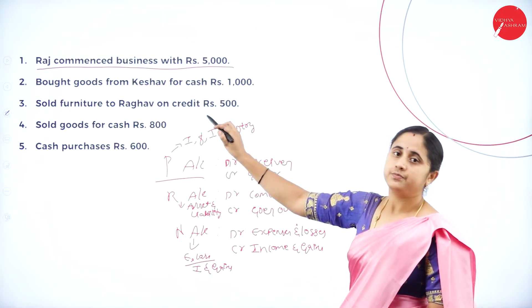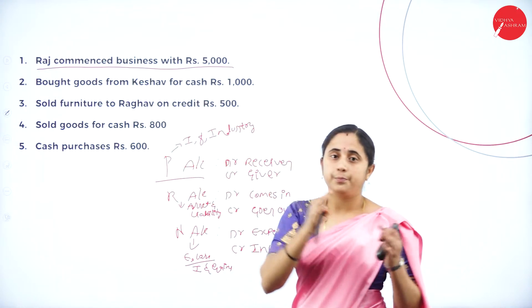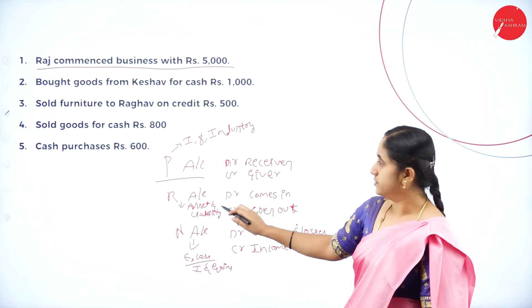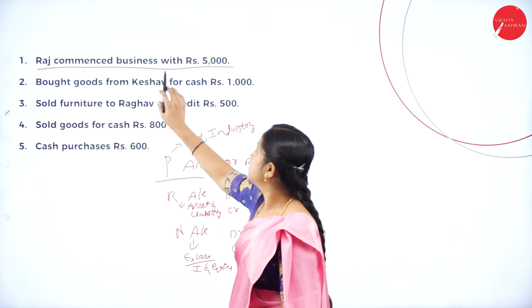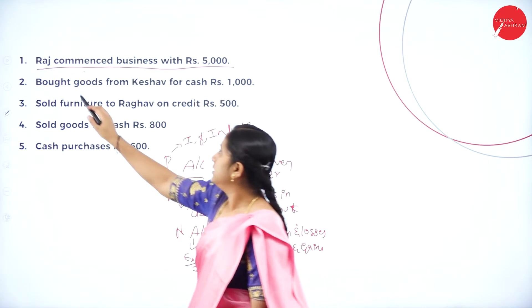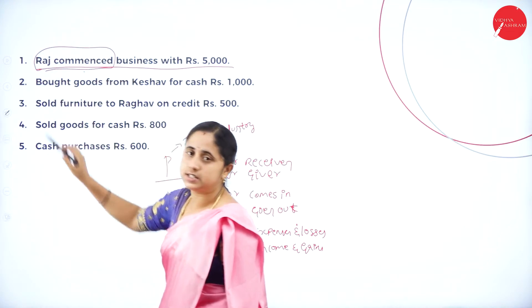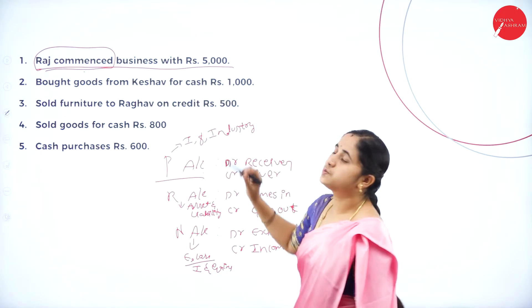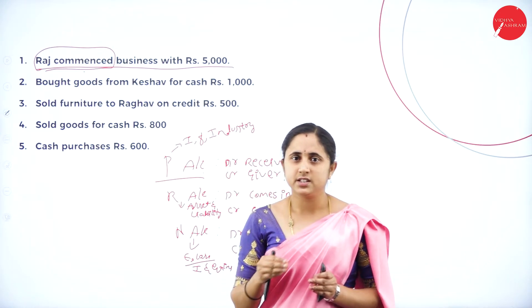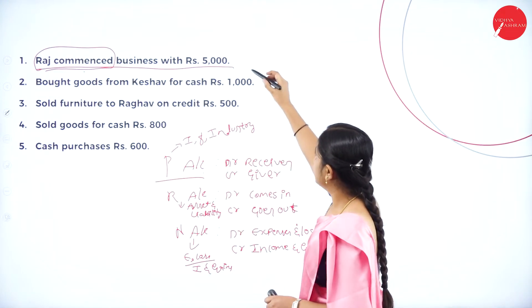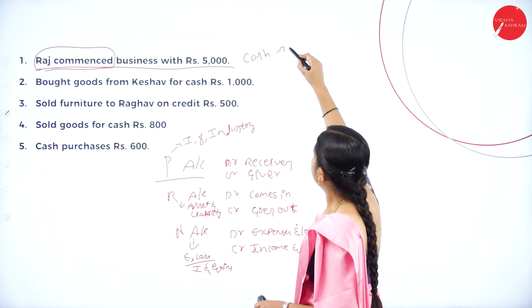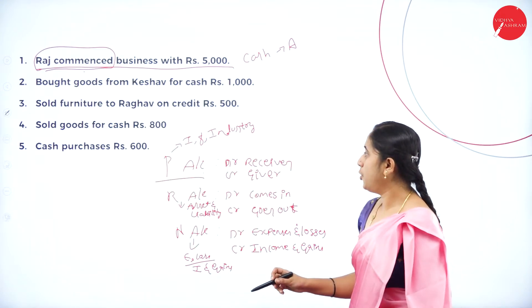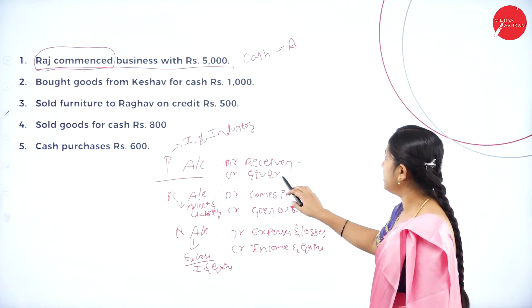First, you must identify whether it is a personal, real, or nominal account — or whether it is an income or expense. For example: Ram commenced business with rupees 5000. Here, Ram is a person, so it comes under personal account. He commenced business with cash of rupees 5000. Cash is an asset, so it comes under real account. For the personal account rule: debit the receiver, credit the giver.